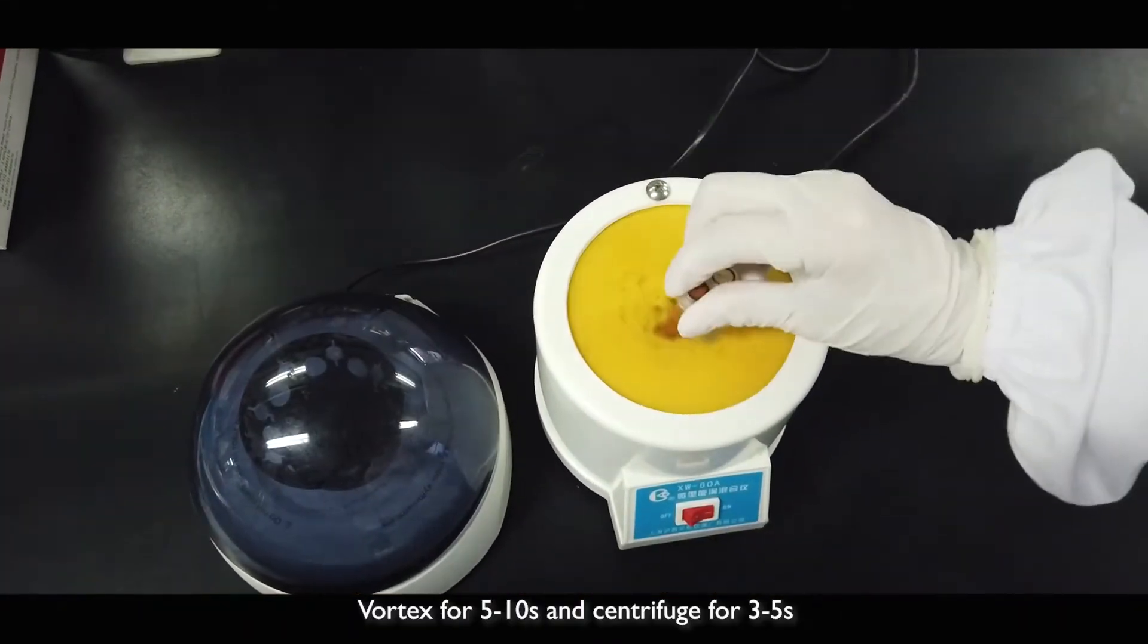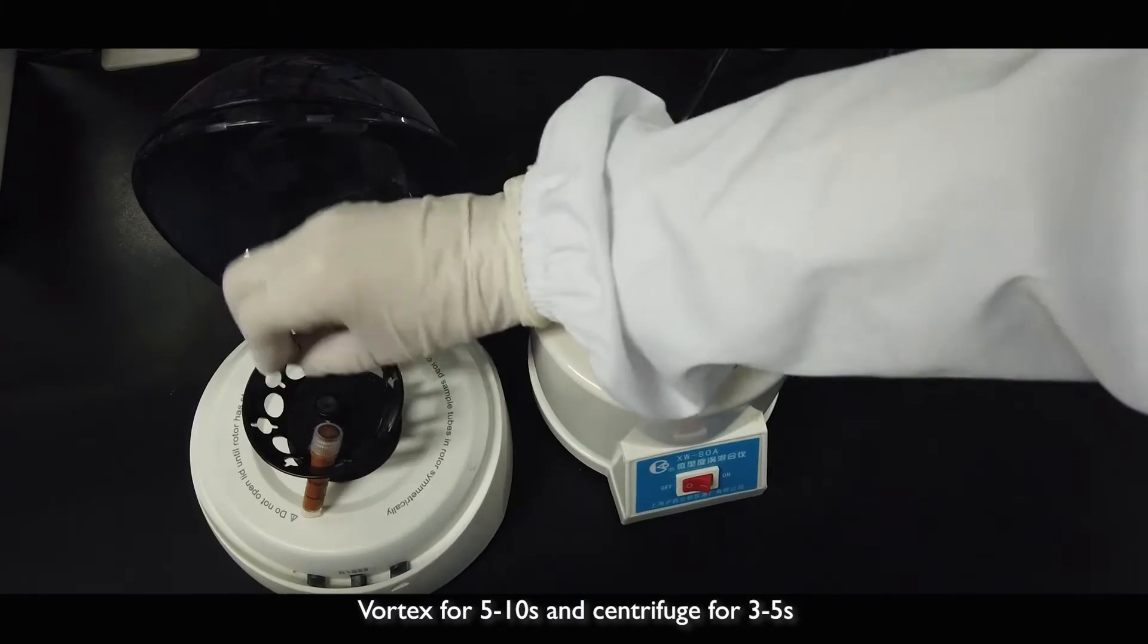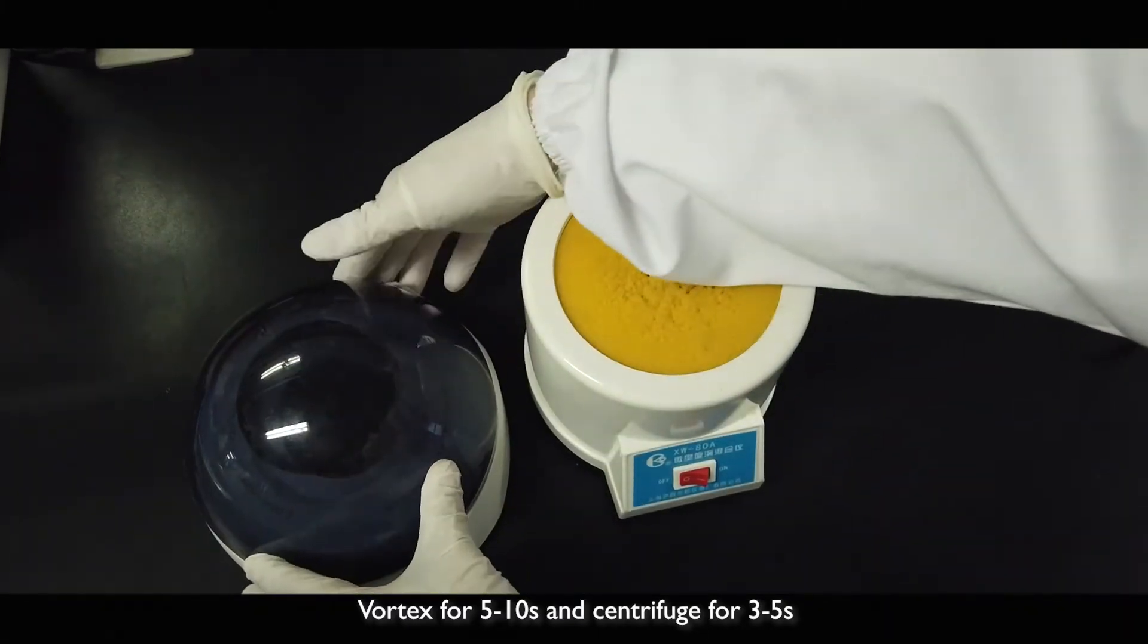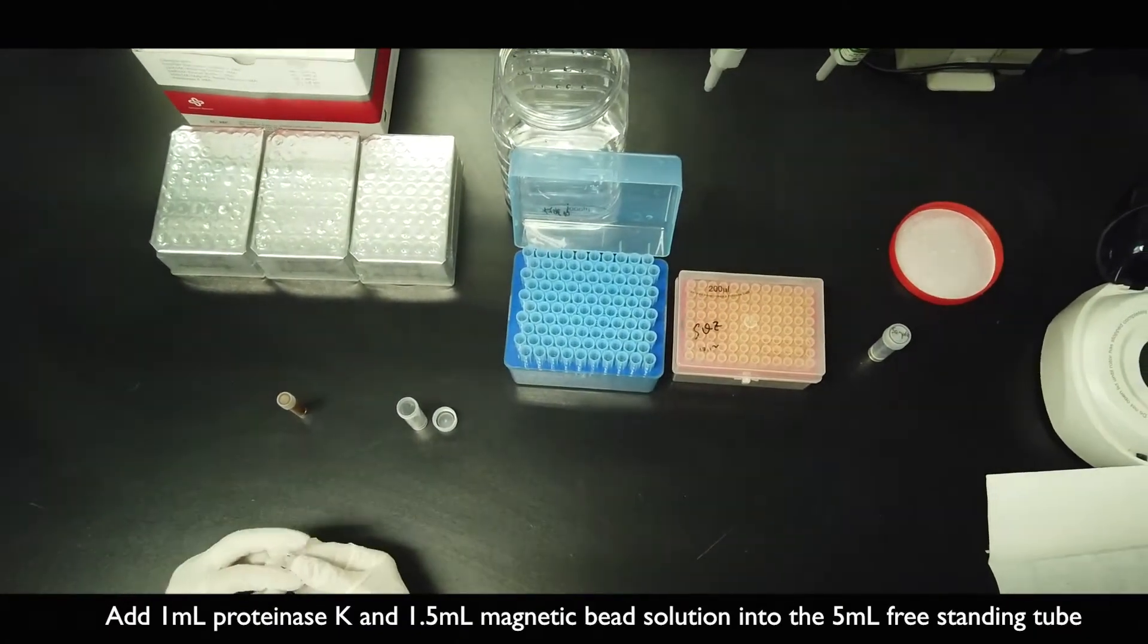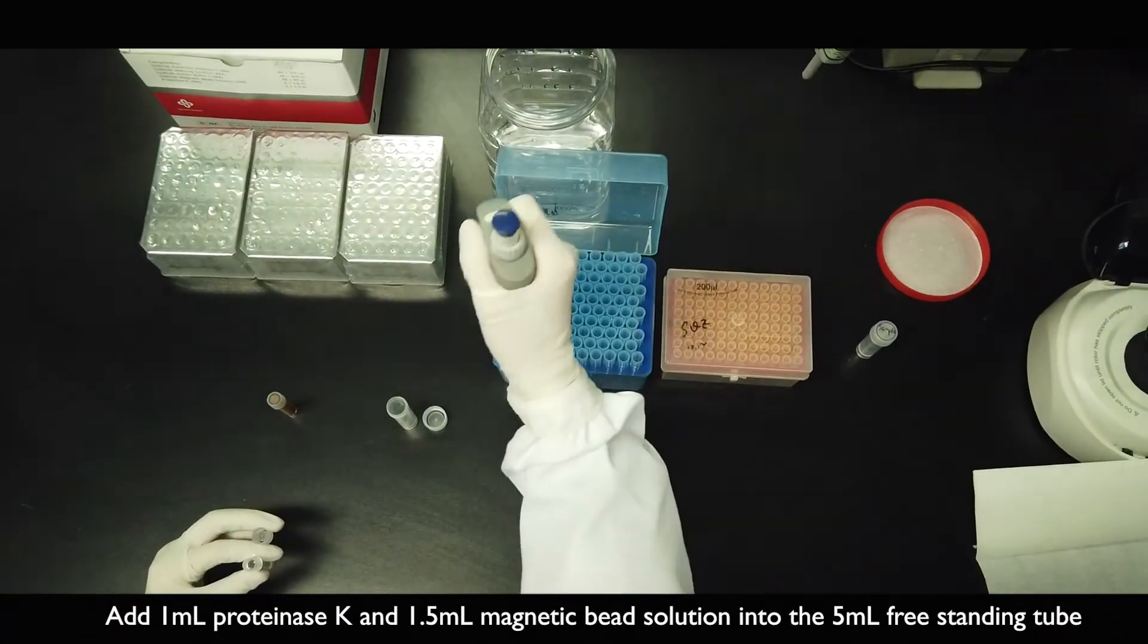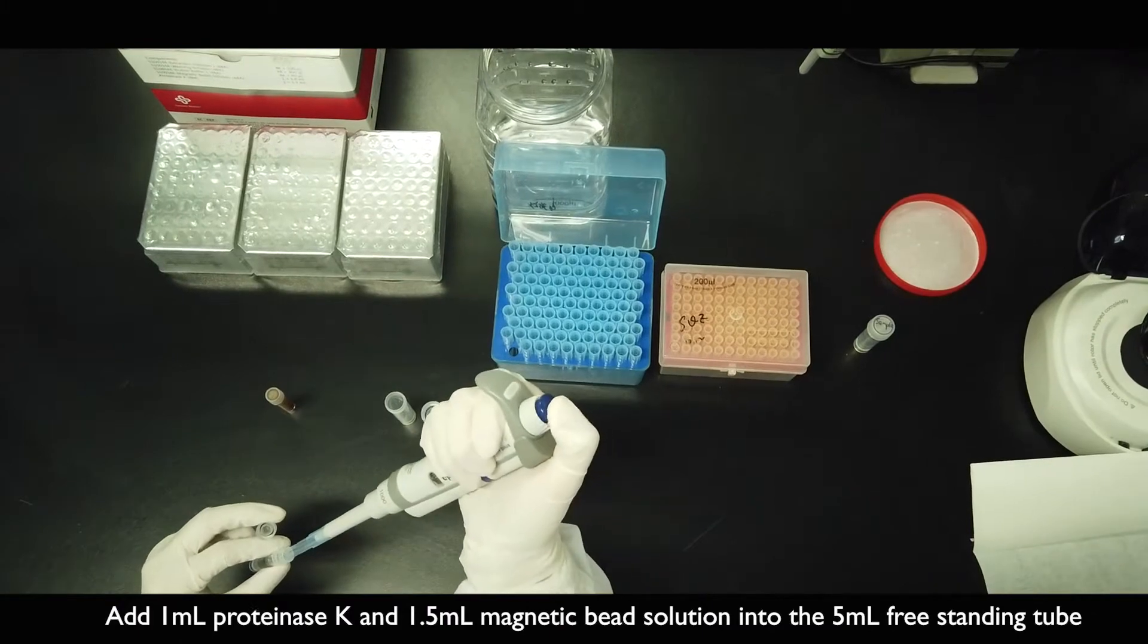Vortex for 5 to 10 seconds and centrifuge for 35 seconds. Add 1 mL proteinase K and 1.5 mL magnetic bead solution into the 5 mL freestanding tube.